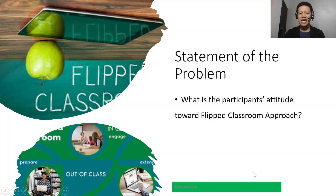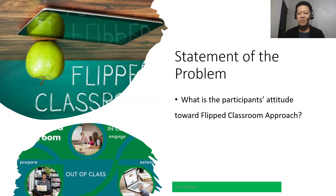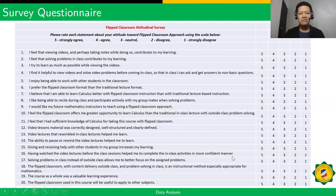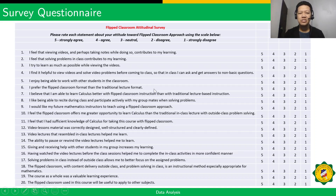Let's look at an example using a research paper. The statement of the problem is: What is the participants' attitude toward the flipped classroom approach? In this research, the researcher used a survey questionnaire to determine the attitude of the participants or respondents toward the flipped classroom approach.